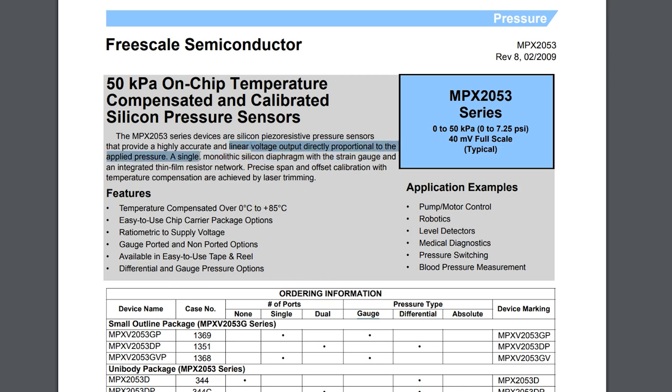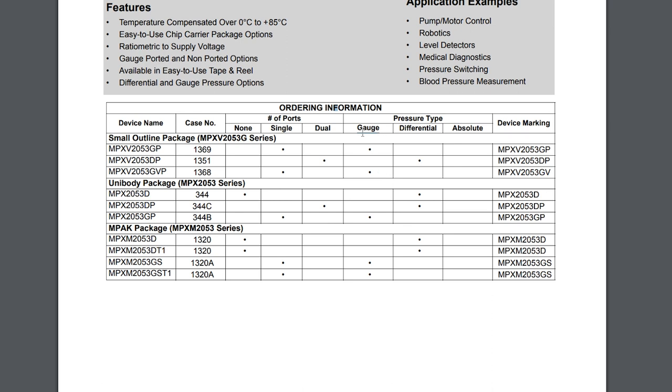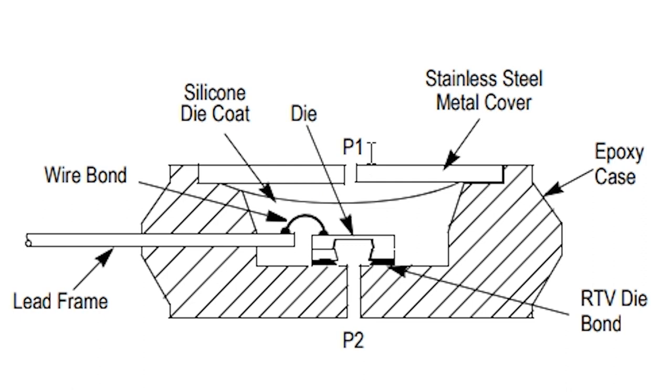I decided to buy an MPX2053, a sensor with voltage output proportional to applied pressure. For my application, best would be the differential version with two terminals, but it was too expensive for my budget. Instead I chose the gauge version that compares the pressure from the P1 terminal to atmospheric pressure directed through a vent hole on the back side of the sensor, P2.